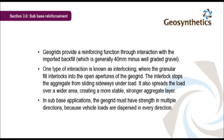Geogrids provide a reinforcing function through interaction with the imported backfill, which is generally 40mm minus well-graded gravel. One type of interaction is known as interlocking, where the granular fill interlocks into the open apertures of the geogrid. The interlock stops the aggregate from sliding sideways under load. It also spreads the load over a wider area, creating a more stable, stronger aggregate layer.